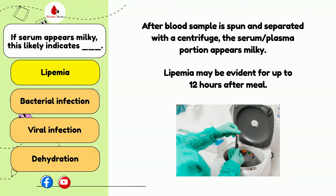Regarding dehydration — we can tell when a patient is dehydrated during the blood draw because the blood would be thick and have a slow flow. The patient would have a higher hematocrit compared to when fully hydrated. Hematocrit is the measurement of red blood cells compared to the liquid portion of the blood, so when we are dehydrated, our liquid is lower than normal.